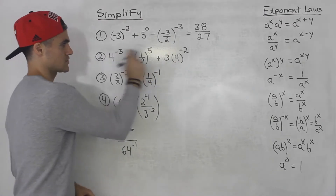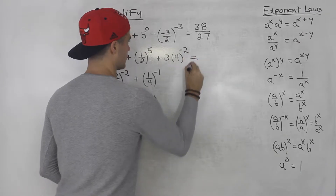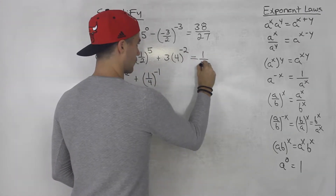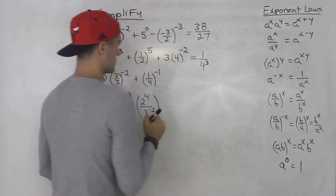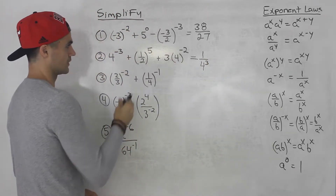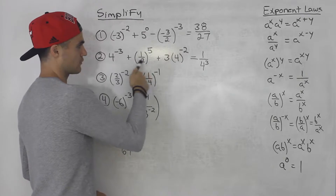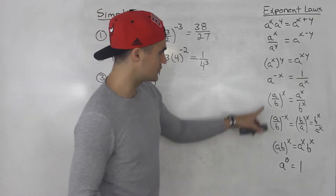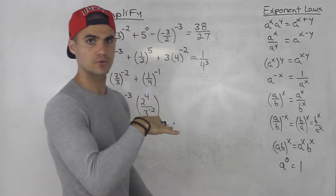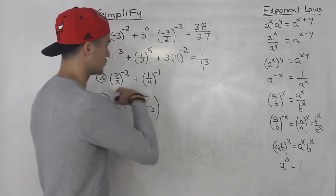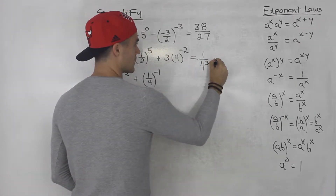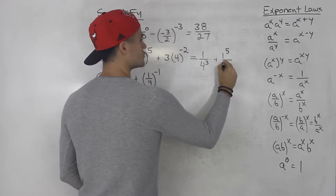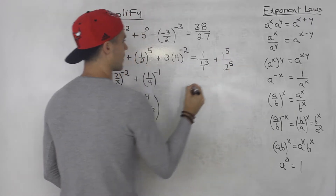Again, just work with each of these individually first. So four to the negative three is one over four to the power of positive three. For one over two to the power of five, we have a fraction to a positive exponent, so we distribute that exponent to the numerator and denominator. This ends up being one to the power of five over two to the power of five.